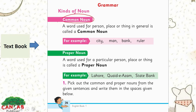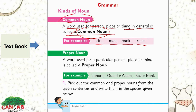Let's discuss the common noun first. A word used for a person, place, or thing in general is called the common noun. It can be any city, any man, any bank, any ruler — we are talking generally about persons, places, or things.